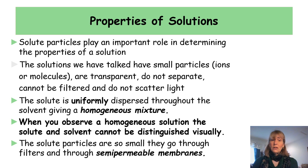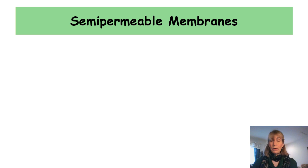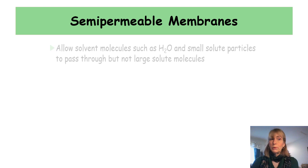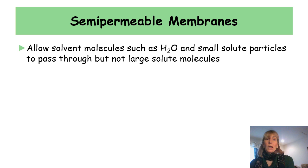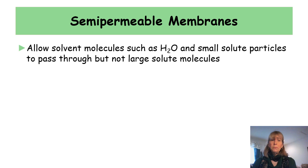In the solutions we've been discussing, the solute is uniformly dispersed throughout the solvent — it's a homogeneous mixture. In a homogeneous solution, the solute and solvent can't be distinguished visually. The solute particles (ions or molecules) are so small that they pass through filters and through semi-permeable membranes. Semi-permeable membranes allow solvent molecules like water and small solute particles such as ions and small molecules to pass right through them, but do not allow large solute molecules through.